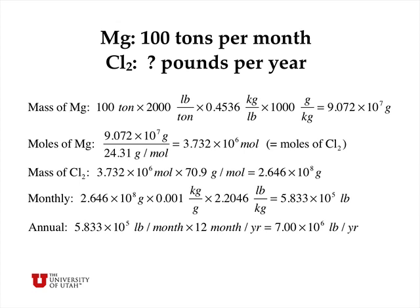We can convert grams to pounds, so that's 5.8 times 10 to the 5th pounds. On an annual basis, we multiply by 12 months per year, and that gives us 7 million pounds of chlorine gas per year.